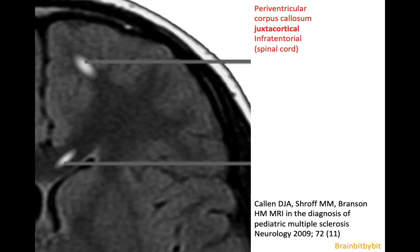Juxtacortical is a difficult term for some people, but it means next to the cortex — not in the region of the cortex, not subcortical, but really at the grey-white matter boundary involving the U-fibers. This is also a typical location for multiple sclerosis.